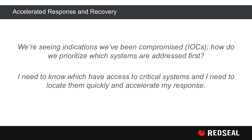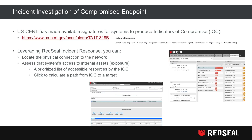RedSeal can also be used to accelerate response and recovery. If we're seeing indications of compromise being reported in our SIEM, how do we prioritize which systems to address first? We need to know which systems have access to critical assets and locate them quickly to accelerate response. US-CERT has made available a signature list for systems to produce indicators of compromise — review these at the US-CERT site. As you identify indicators of compromise, you can leverage the RedSeal incident response framework.